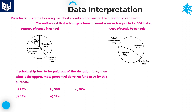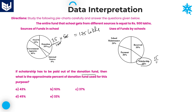Question three: if scholarship has to be paid out of the donation fund, first calculate donation — 35% of 500 lakhs. Two zeros cancel: 35 × 5 = 175 lakhs. Donation is 175 lakhs. Scholarship is 15% of 500 lakhs: two zeros cancel, 15 × 5 = 75 lakhs. So scholarship amount is 75 lakhs.